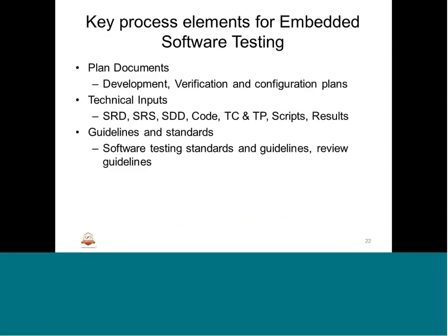Some of the key process elements for embedded software testing: in this slide I have put three main elements required to do software testing, which all fall into a process. We need to have a planning document — it is a very vital input. The documents are the development verification and configuration plan, which covers what the verification plan will be, what the configuration plan will be, and what development environment will be used. This is one of the very important inputs for embedded software testing that is followed in the industry.